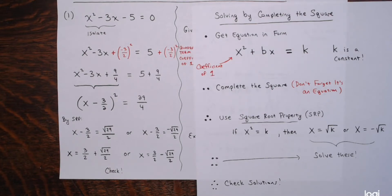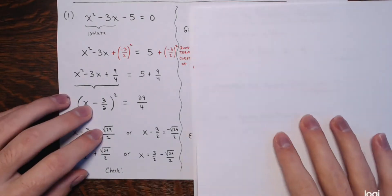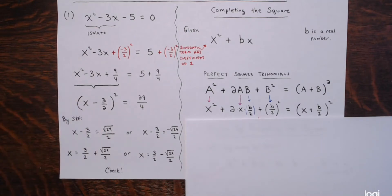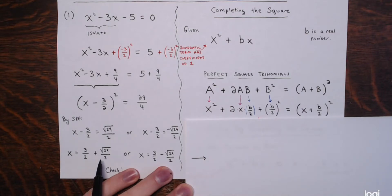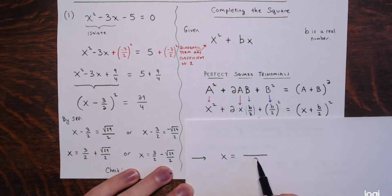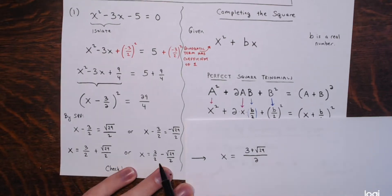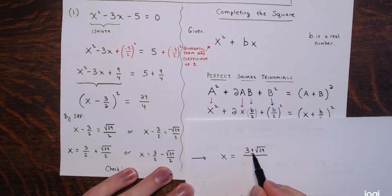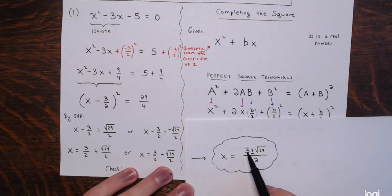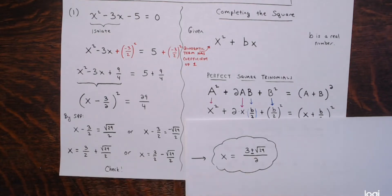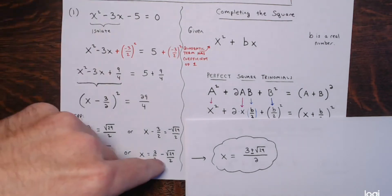Another way to express these solutions: since 3/2 and √29/2 have the same denominator, we can write x = (3 ± √29) / 2. The plus-or-minus symbol means there are two solutions — one with the plus, one with the minus. I personally prefer writing them separately.